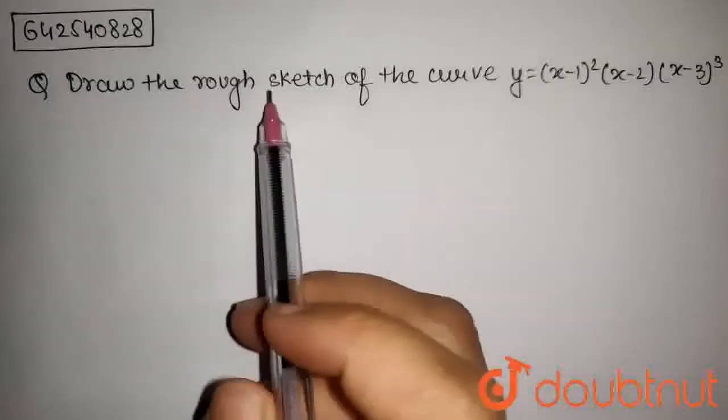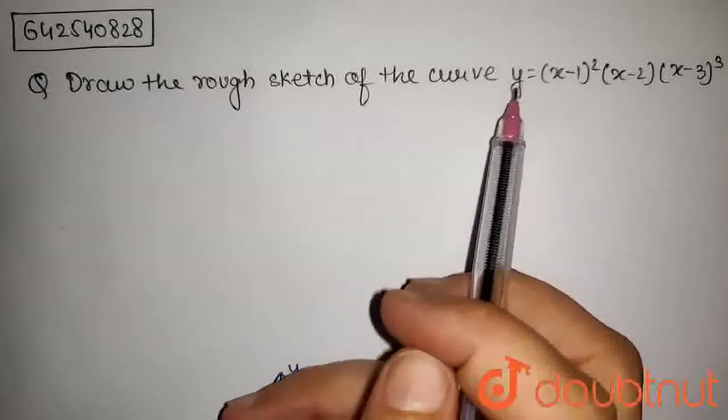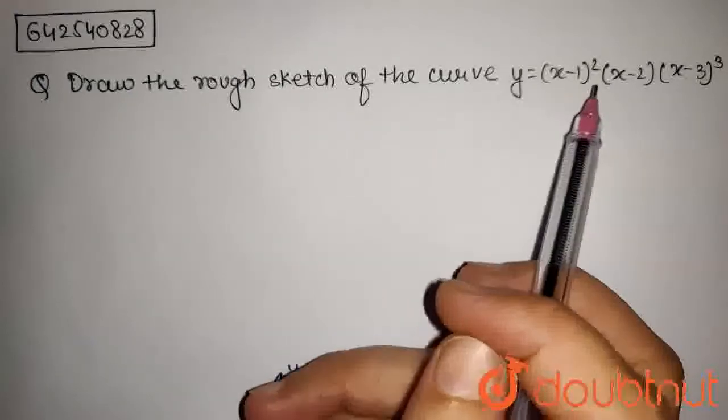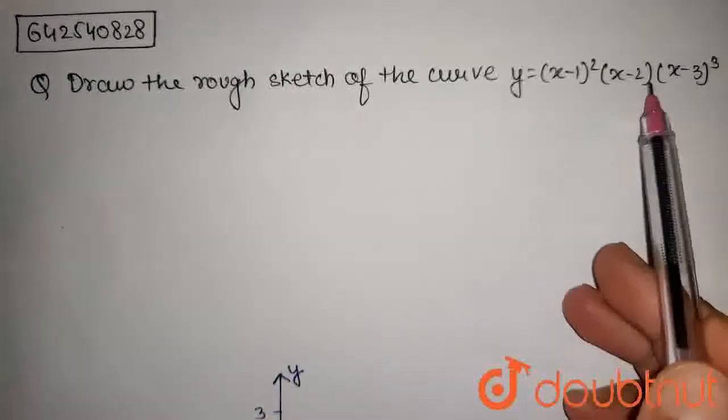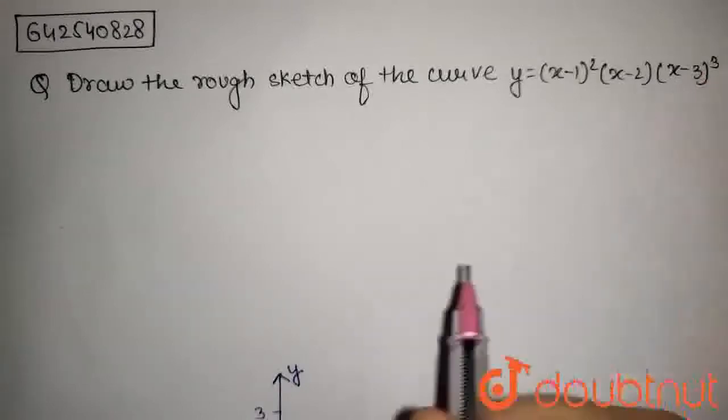The question is, draw the rough sketch of the curve y equals x minus 1 whole square, x minus 2, x minus 3 whole cube.